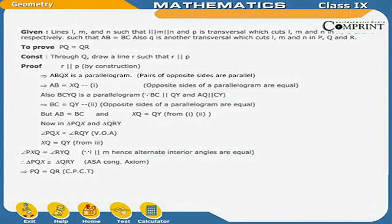Given: Lines L, M and N such that L is parallel to M is parallel to N, and P is a transversal which cuts L, M and N at A, B and C respectively, such that AB equals BC. Also, Q is another transversal which cuts L, M and N at P, Q and R. To prove: PQ equals QR.